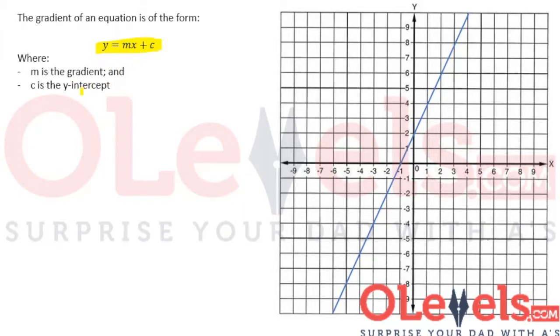If you don't remember what the y-intercept was, it's simply the y-value when the graph cuts through the y-axis. So in our case, the y-intercept is 2.